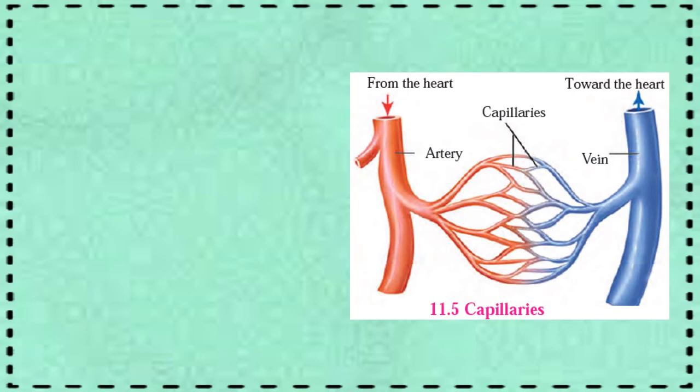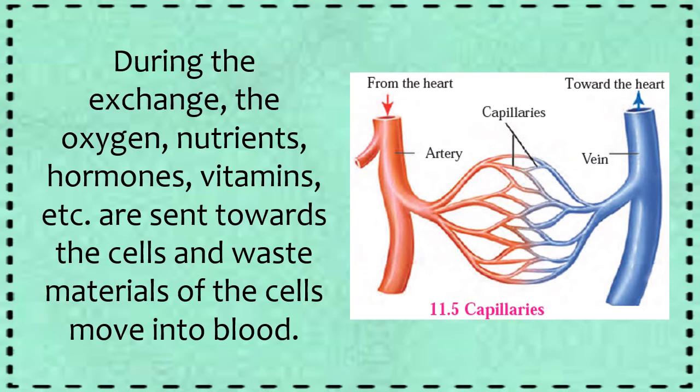The walls of capillaries are extremely thin and made up of a single layer of cells. Due to this, exchange of materials between capillaries and cells becomes easy. During the exchange, oxygen, nutrients, hormones, vitamins, etc. are sent towards the cells, and waste materials from the cells move into the blood. Capillaries then unite together to form vessels of larger diameter called veins. Capillary networks are present in each organ, meaning capillaries are present throughout our body.